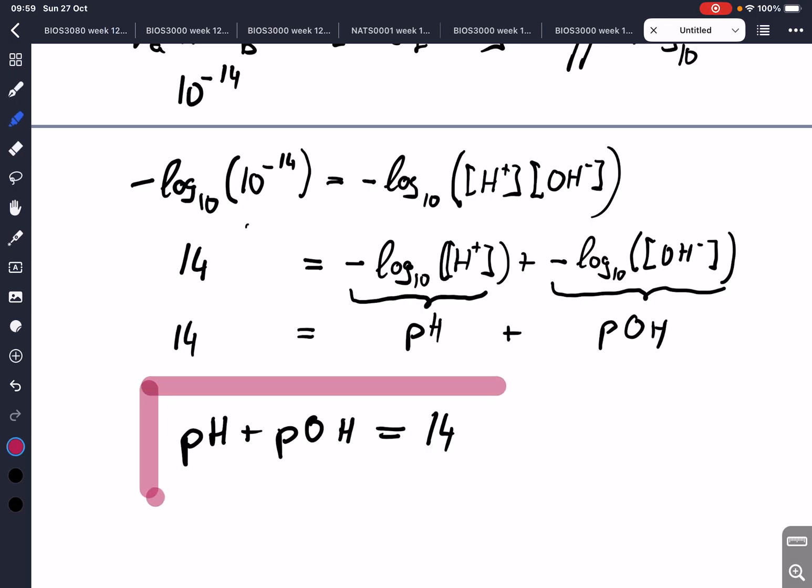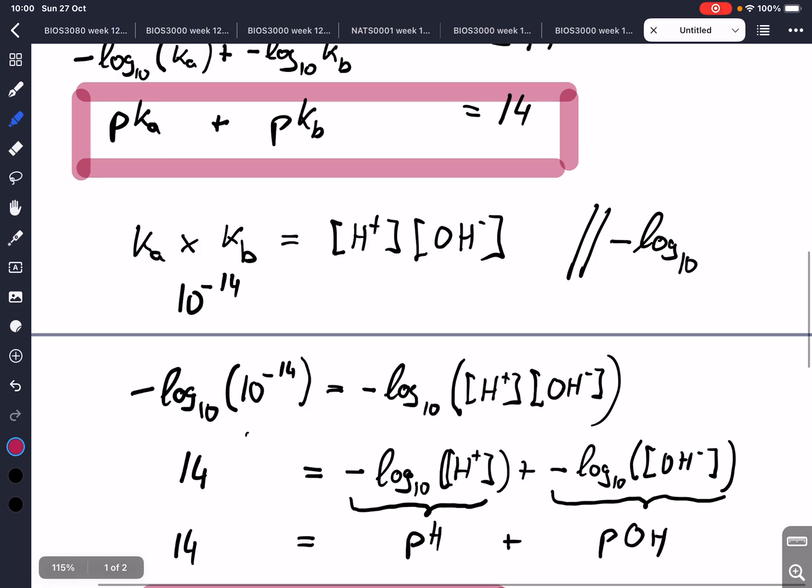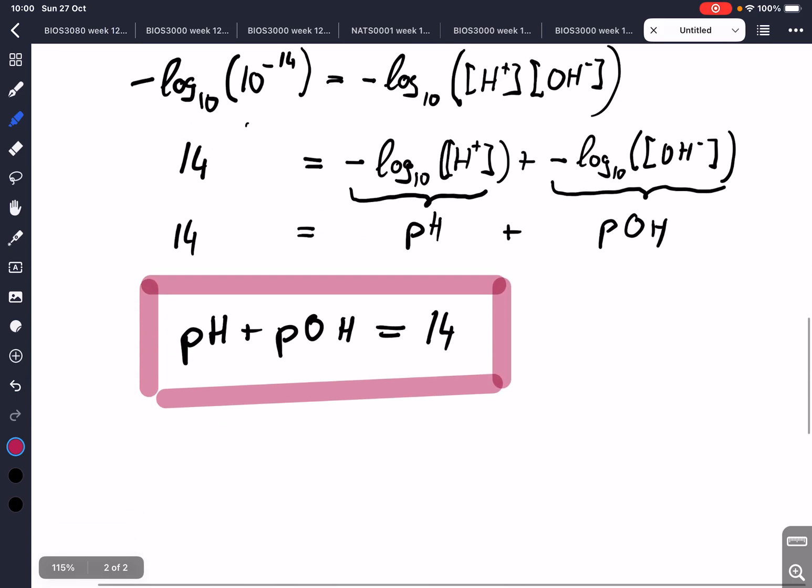So these are two important relationships, pKa plus pKb adds up to 14, and pH plus pOH also adds up to 14. So I hope this makes sense, and thank you very much for watching.